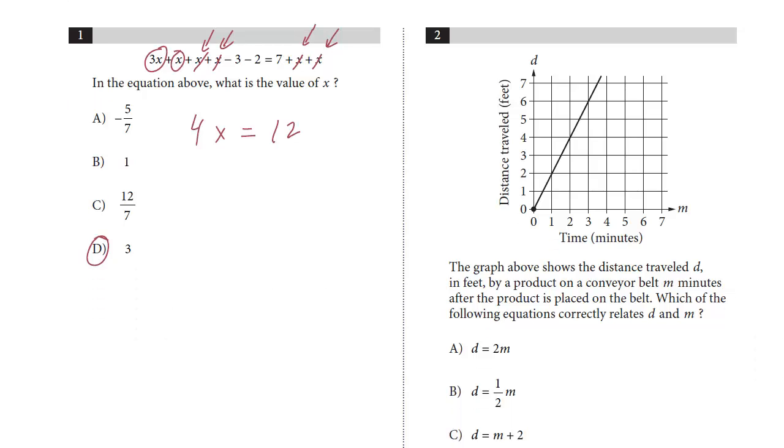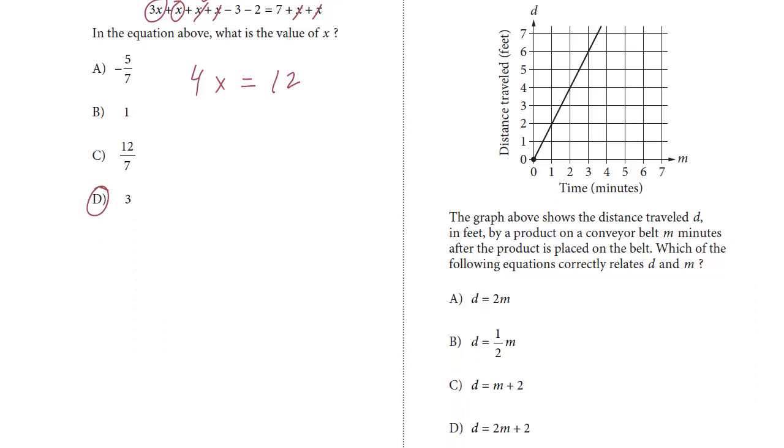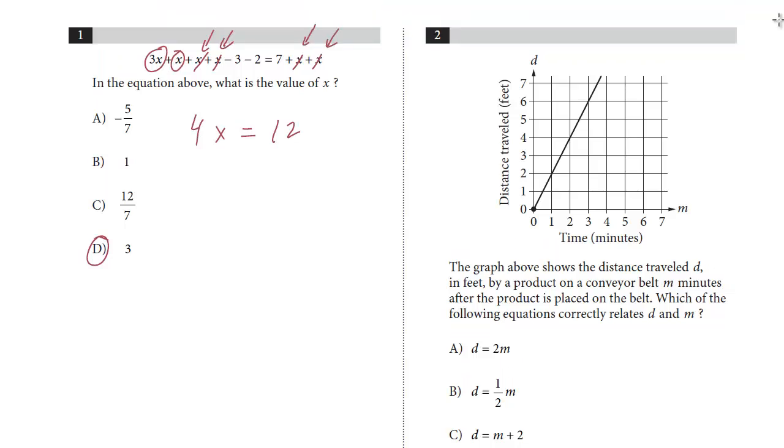Let's take a look at question number 2. We have this xy-coordinate plane. We've got distance traveled in feet on the y-axis, time in minutes on the x. The graph shows the distance traveled d in feet by a product on a conveyor belt in minutes after the product is placed on the belt, which of the following equations correctly relates d and m.